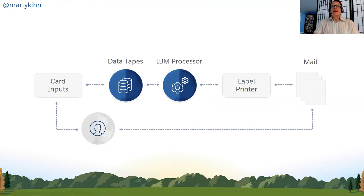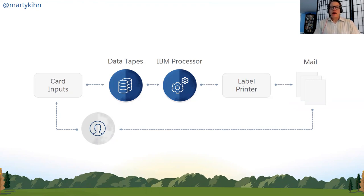This is a picture of their MarTech stack, 1962 era — card inputs, data tapes, the processor as the brains of the system, and a label printer. Data was stored on reel-to-reel magnetic tapes. They had a single channel: direct mail. And they had a measurement closed loop — as solicitations and donations came in, somebody would tabulate them, punch out the results on a punch card, and feed it back into the system. Every single person, sometimes at the household level, had a dedicated line on the data tape.